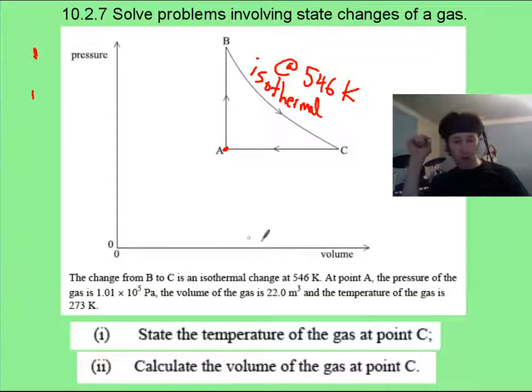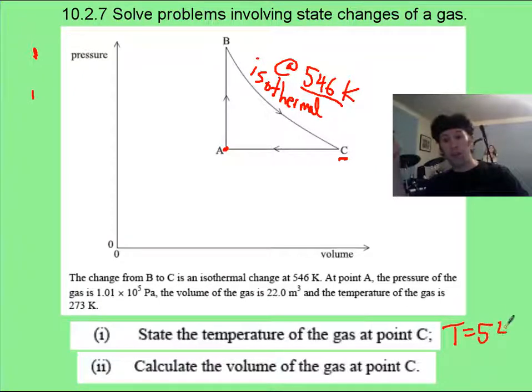Part one of getting the temperature at point C is a trick question for suckers. Don't fall for it. Because they tell you it's an isothermal at 546 Kelvin, which means, isotherm, the temperature does not change. So it is always a temperature of 546 Kelvin. That's it. That's your answer.